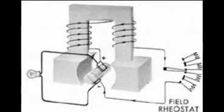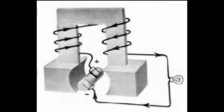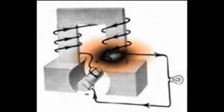The voltage produced by a shunt generator shown here is practically independent of the current taken by the external circuit. In a series generator, the field is connected in series with the armature and the external circuit. The coils consist of a few turns of heavy wire having a low resistance in order to carry the whole current from the armature to the external circuit. In this type of generator, the output voltage increases as the load increases, for when more current is taken from the machine, more goes through the field coils, thus causing a stronger magnetic field.